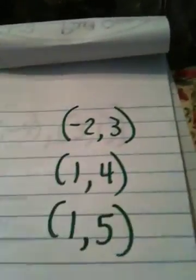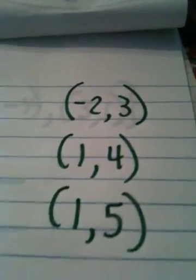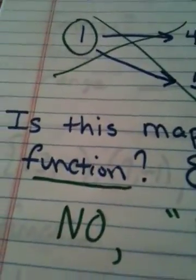Now, it's still a relation. It is still a set of ordered pairs. That's clear. It is still a relation, but it is no longer called a function.